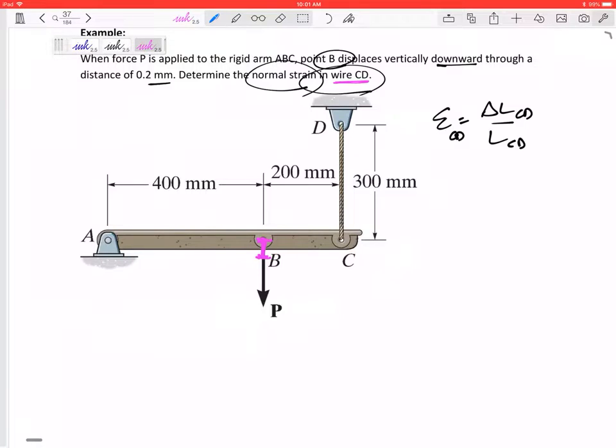Let's think about wire CD and how much it's going to change in length. This is a rigid arm, so this arm that was right here—it's still gonna stay straight—but now it's gonna be right here.